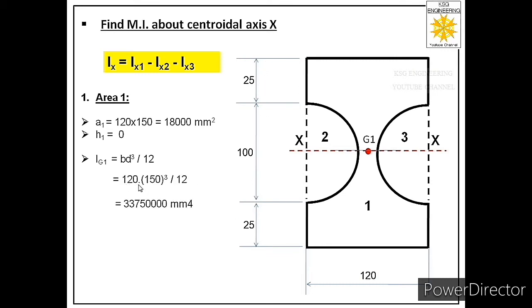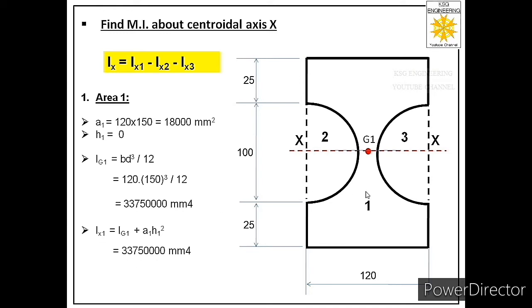The formula becomes 120 × 150³ / 12, giving us Ig1. Then applying the parallel axis theorem: Ix1 = Ig1 + A1 × h1². Since h1 = 0, the area moment of inertia of area 1 about the main axis equals its centroidal moment of inertia Ig1.